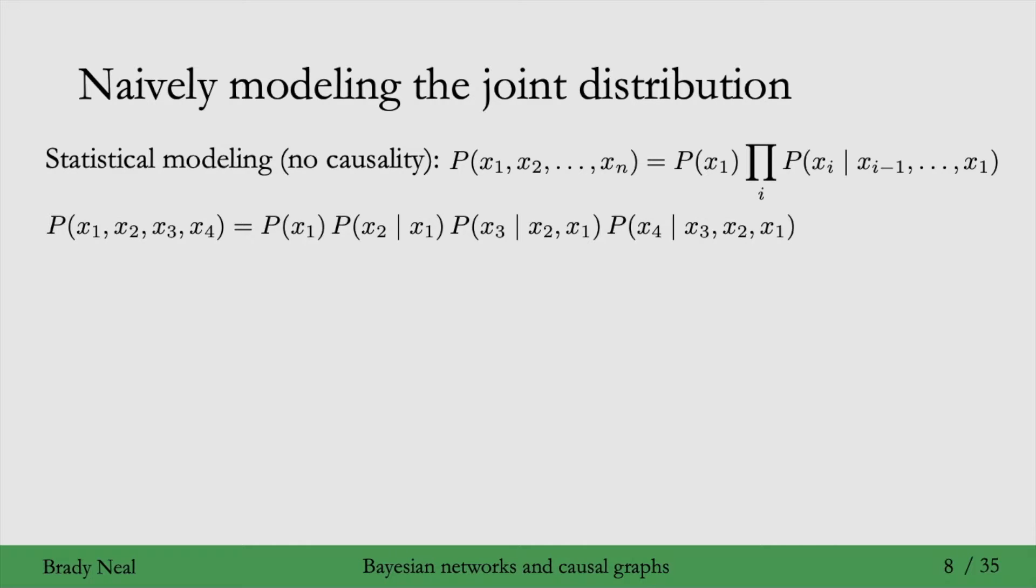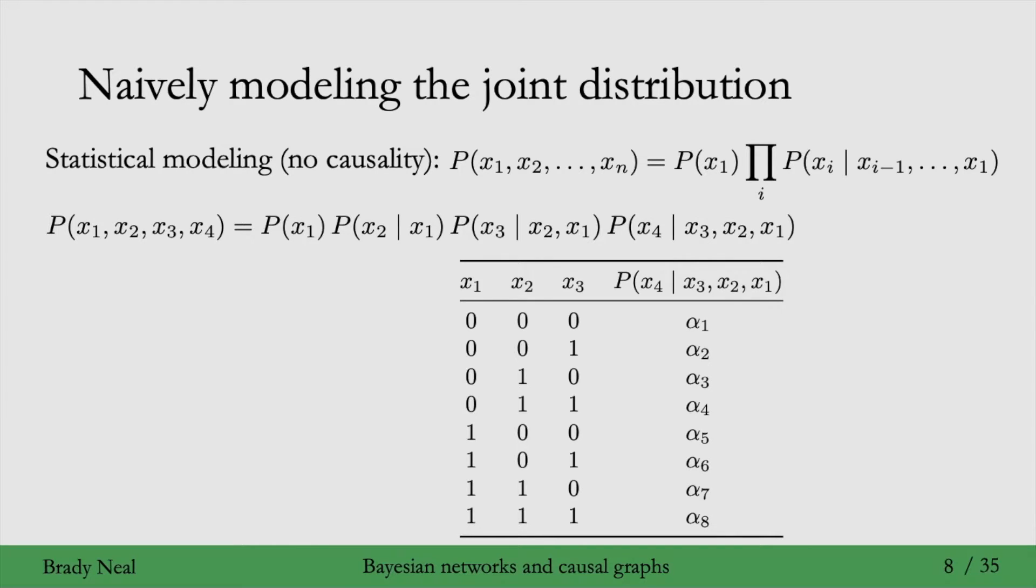So if we want to model this distribution, we need to model at least one of the factors, at least the P of x4 given everything before it factor. And if all of these variables are binary, this isn't important for the argument, but let's just take them to be binary, then we can write a model for P of x4 given x3, x2, and x1 using this table.